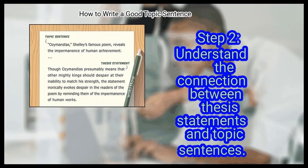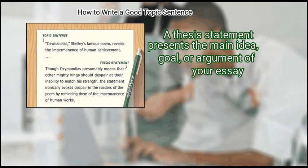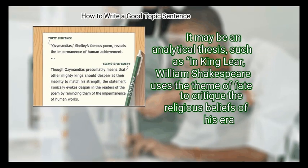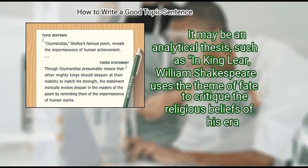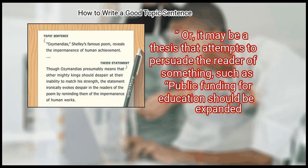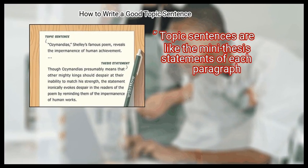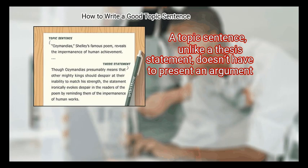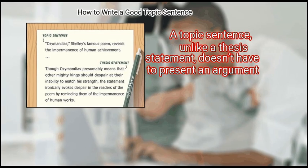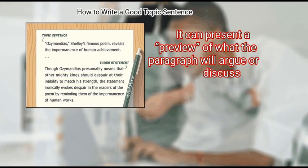Step 2: Understand the connection between thesis statements and topic sentences. A thesis statement presents the main idea, goal, or argument of your essay — it may be analytical, such as arguing Shakespeare uses fate to critique religion, or persuasive, such as arguing public funding for education should be expanded. Topic sentences are like the mini thesis statements of each paragraph. Unlike a thesis statement, a topic sentence doesn't have to present an argument; it can preview what the paragraph will argue or discuss.